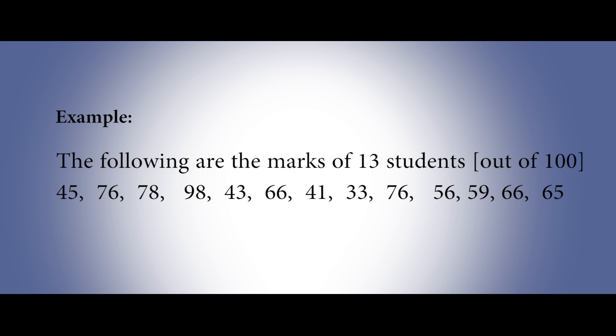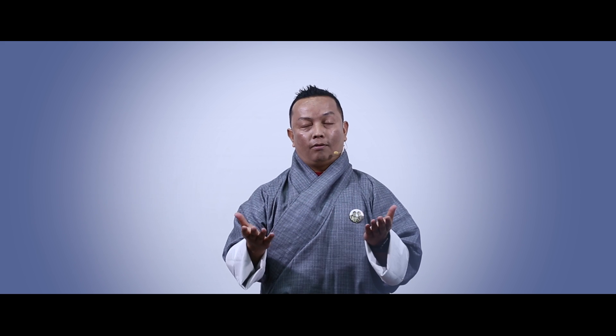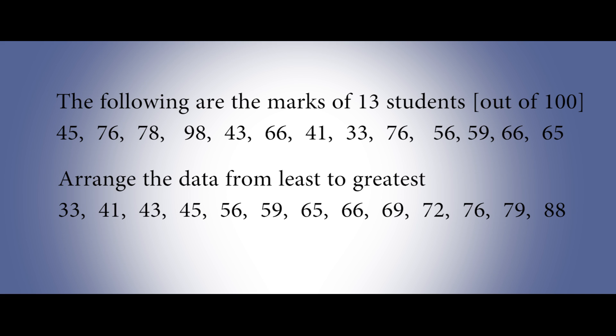The next part is how to represent data into a box-and-whisker plot. I am going to give you an example of 13 students who scored different marks out of 100: 30, 45, 76, 78, 98, 43, 66, 41, 33, 76, 56, 59, 66, and 65. These are the marks scored by 13 students. In order to represent these marks into a box-and-whisker plot, we need to arrange the data from least to greatest. The least mark is 33 and the highest is 98.